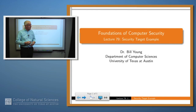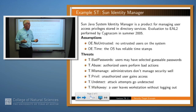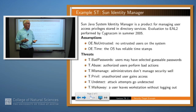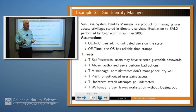Let's look at an example of that. The example we're going to consider is something built by Sun called the Java System Identity Manager, and this was evaluated to EAL2. Remember there are seven EAL levels. This was done in the summer of 2005 — a real system that Sun created and wanted to have evaluated for certain security properties.